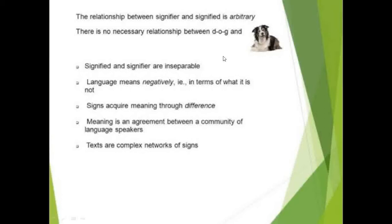There is no necessary relationship between DOG and this animal. Signifier and signified are inseparable. Language means negatively — that is, in terms of what it is not. Signs acquire meaning through difference: you understand a dog is a dog because it is different from a cat. A DOG is different from a CAT because they are different codes and refer to different concepts.